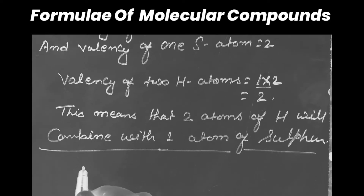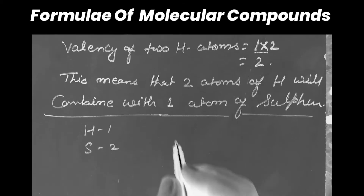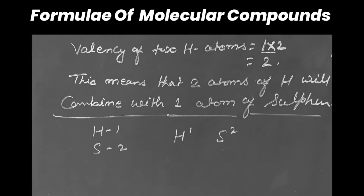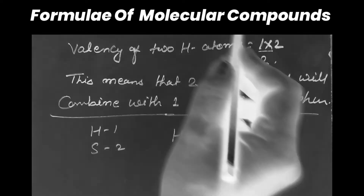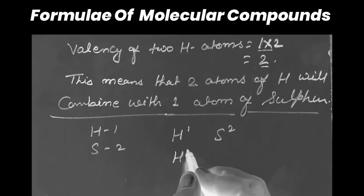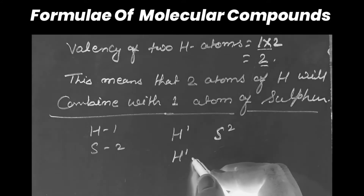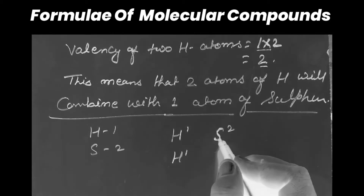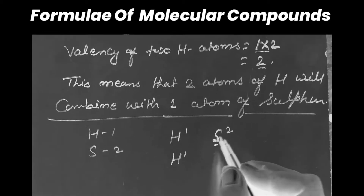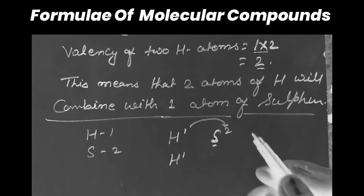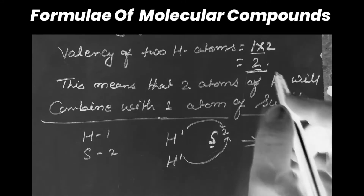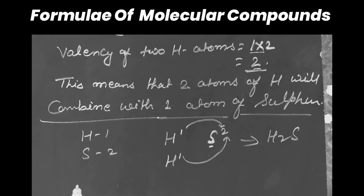Before writing the formula of any compound, we must know some rules. If hydrogen valency is 1 and sulfur valency is 2, we can write the valency as a power — the valencies become superscripts. So: sulfur gets hydrogen's valency (1) and hydrogen gets sulfur's valency (2). One valency of sulfur will cancel with one valency of hydrogen, so one more valency is required — that is why we write double hydrogen. The formula will look like H₂S.